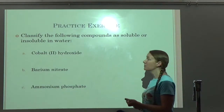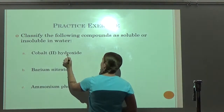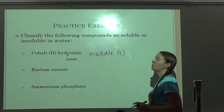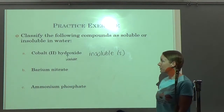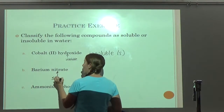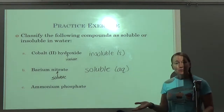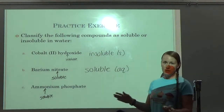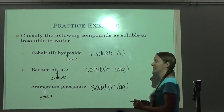Cobalt(II) hydroxide — cobalt is not on your solubility rules, but hydroxide is: hydroxides are insoluble. So cobalt(II) hydroxide is insoluble and would be a precipitate — a solid. The exceptions to the hydroxide rule are your strong bases, which we'll discuss later. Barium nitrate — nitrates are soluble, so barium nitrate is soluble and would not be a precipitate; it would be aqueous. Ammonium phosphate — ammonium is soluble, so even though phosphates tend to be insoluble, ammonium overrides that and the whole thing is soluble — not a precipitate.